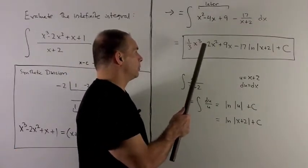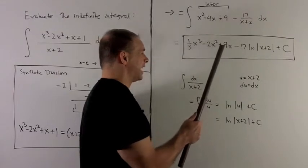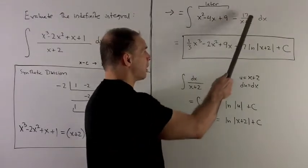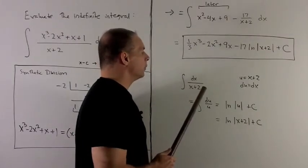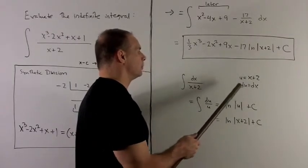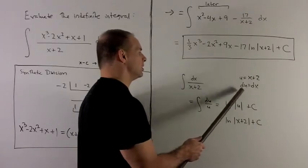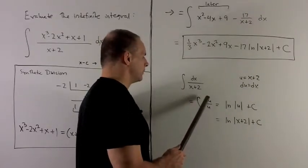So, 1 third x cubed minus 2x squared plus 9x. For this part here, let's take a look. I have dx over x plus 2. I can u substitute. u equals x plus 2. du equals dx. So, I have du over u.